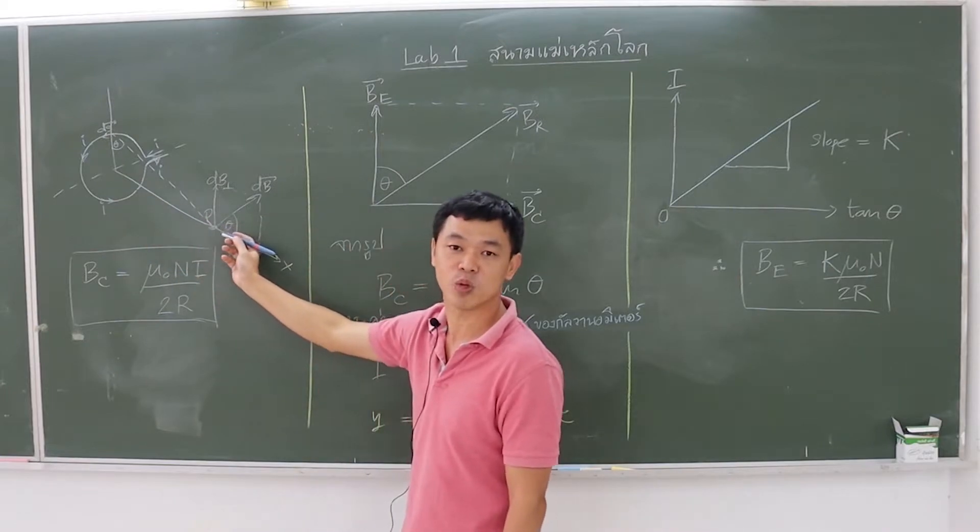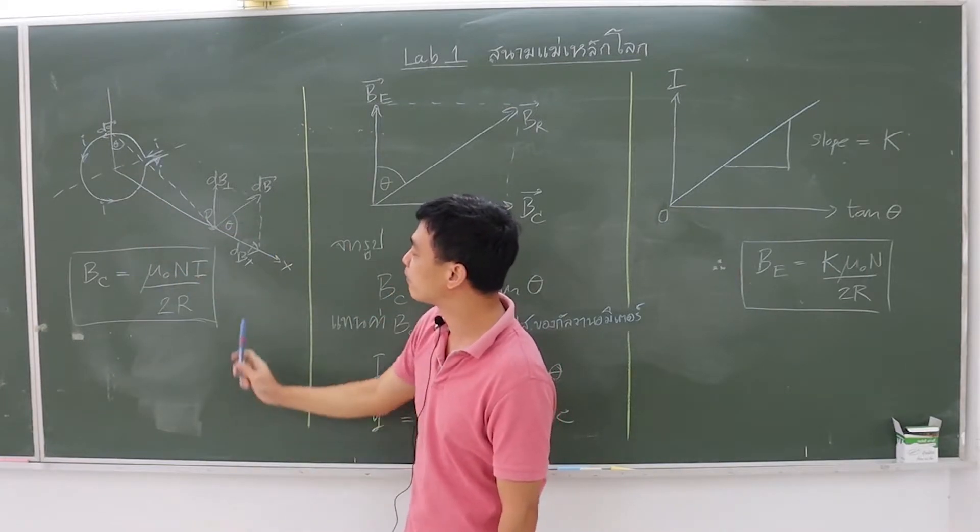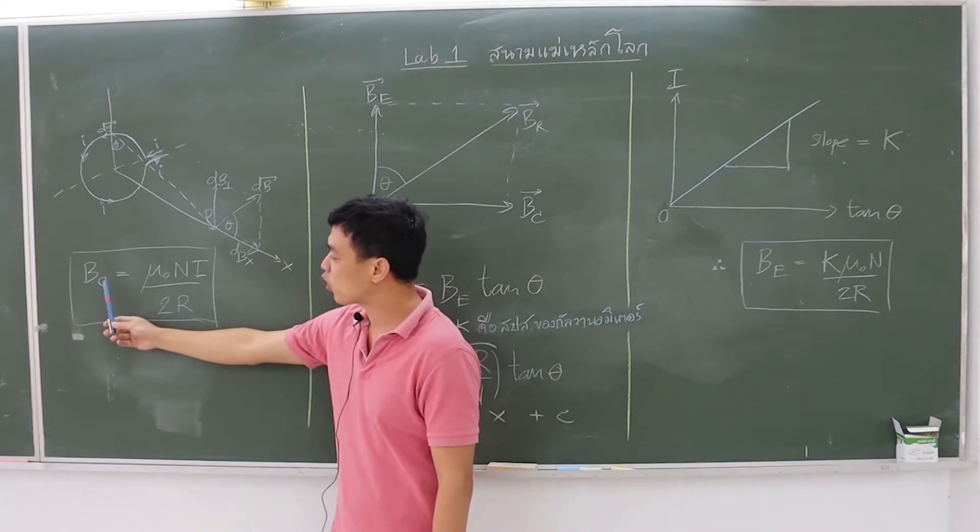Resulting in the value of the magnetic field generated by the coil as BC, as in this equation.